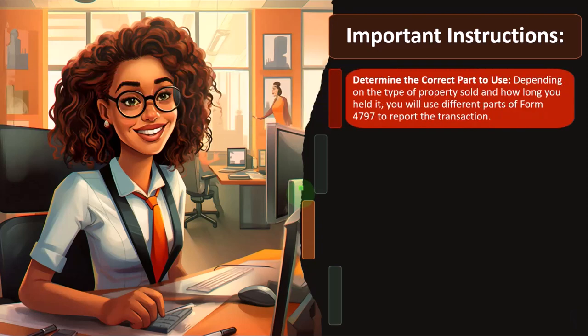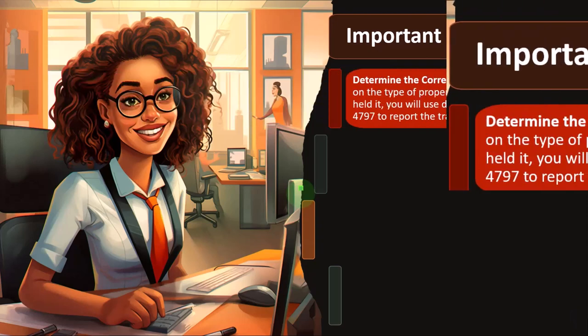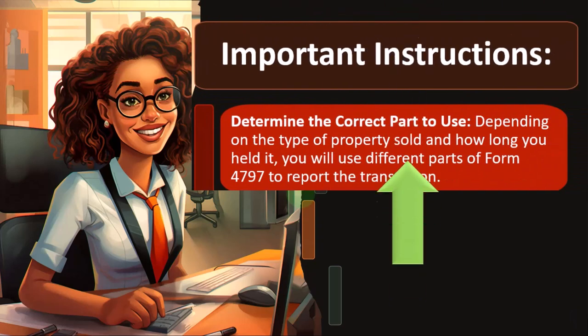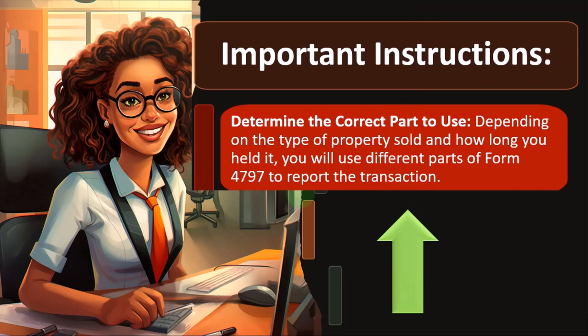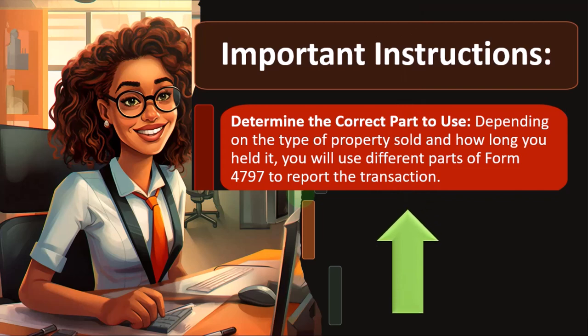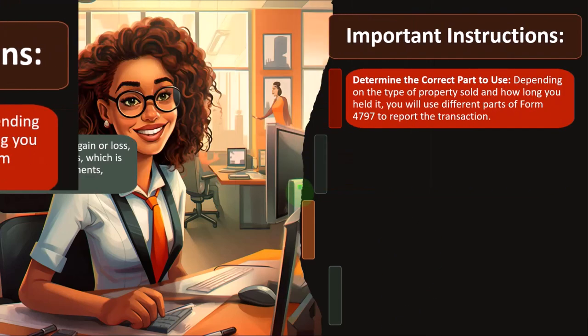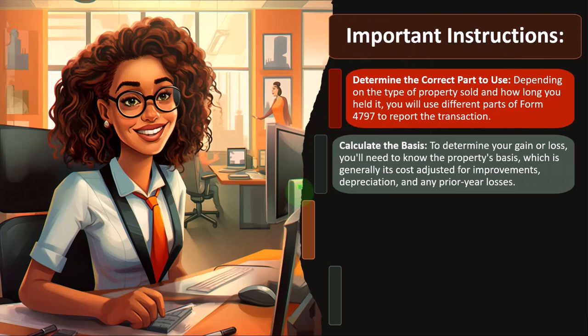Important instructions: determine the correct part to use depending on the type of property sold and how long you held it for. You will use different parts of Form 4797 to report the transaction. Was it long-term or short-term? Do you have recapture involved?